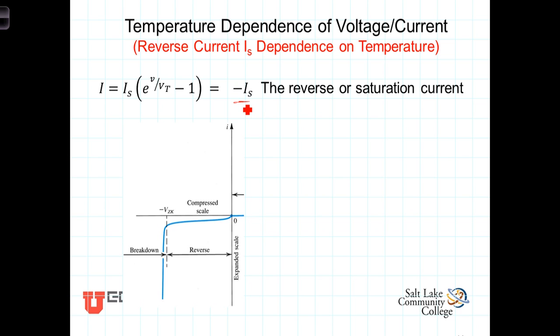So the reverse current, the current flowing through the diode, I sub D, it's going to be greater than I sub S, will double, approximately double, for every 10 degree increase in temperature.